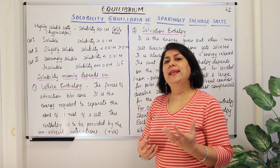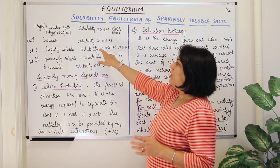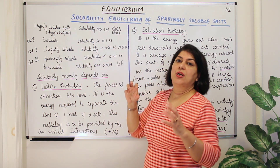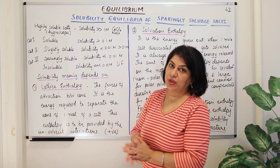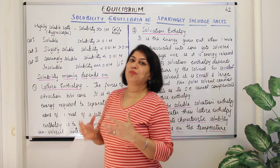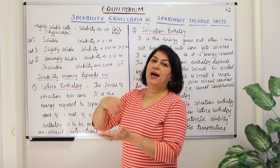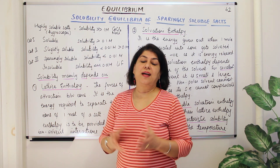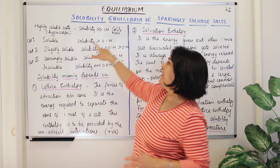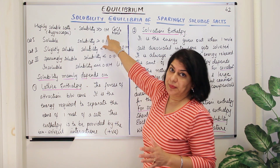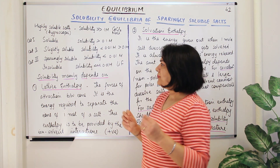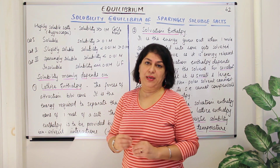Soluble salts are those where the solubility is at least 0.1 moles per liter — the molarity of the solution is 0.1 or greater. Any salt with solubility greater than this molarity is known as a soluble salt. Salts with solubility much much higher than 0.1 moles per liter are known as highly soluble salts, and such salts are so soluble that they are hygroscopic in nature.